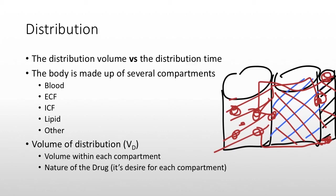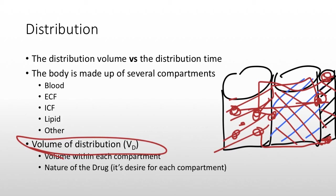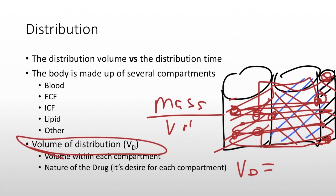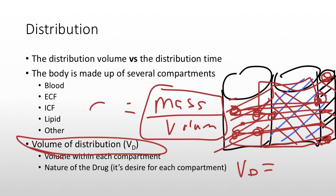Volume of distribution describes two things simultaneously. First, what is the overall volume that the medication is distributed into — is it all of the lipid volume, or all of the albumin volume? Second, it describes a theoretical volume. If the drug is water soluble and distributing equally through any of the water spaces, the volume of distribution can be calculated directly. If I have a certain mass of drug in a certain volume of space, concentration equals mass over volume — so volume of distribution equals mass of drug divided by the drug's concentration.